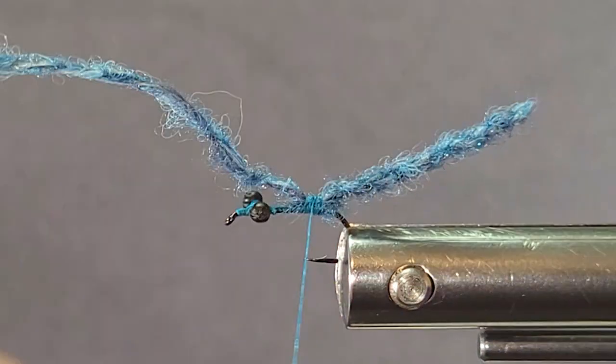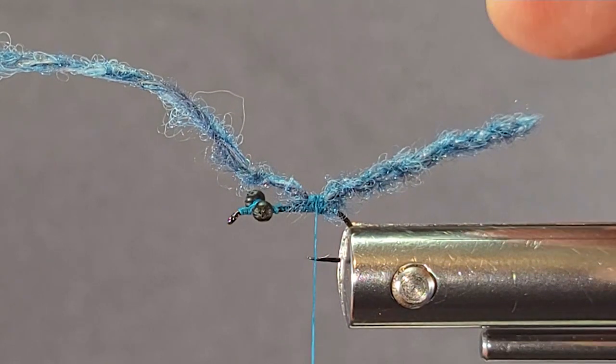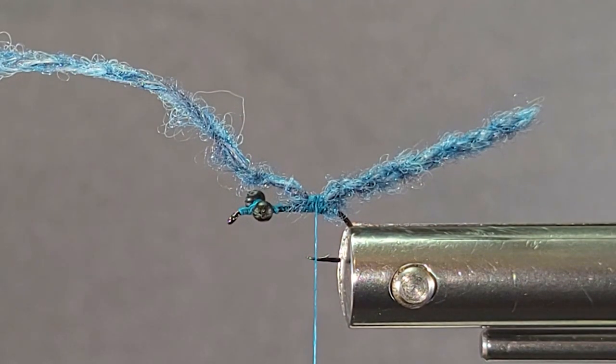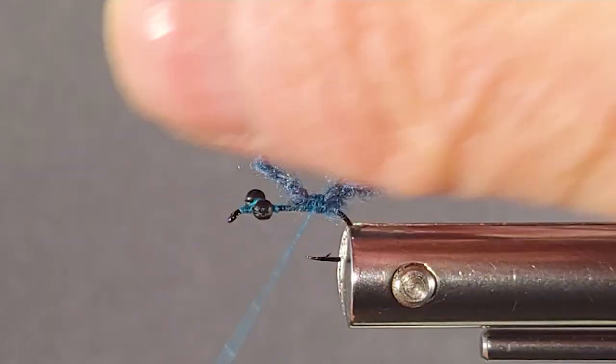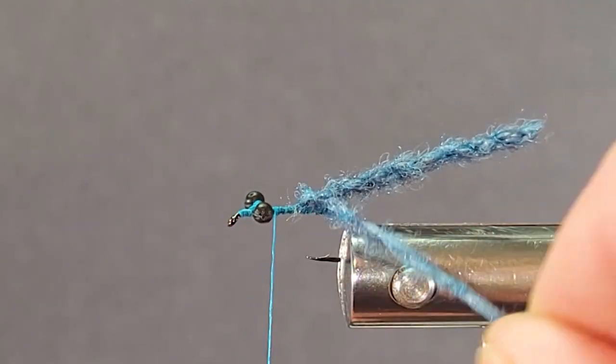So that's how that does. It just forms very, very tight, and then it will back roll back over itself. Then you tie it down. So I'll bring my thread back up here to behind the eye.